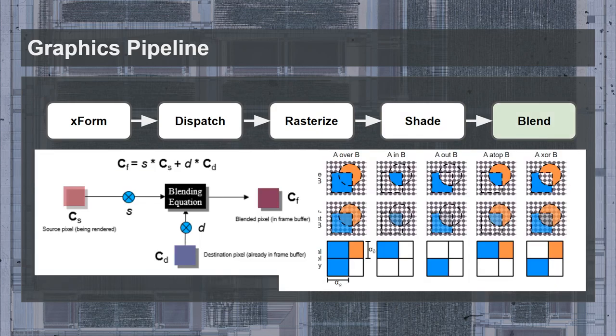And that leaves us with the final stage: blending. This is where the output color gets combined back into the frame buffer using some color math. Essentially, the corresponding pixel from the frame buffer gets read, operated on using the shade color computed in the previous step, and placed back into the frame buffer. There are many different possible ways to combine the colors. Also note that in many GPUs that support depth buffers, this is where depth testing is resolved.